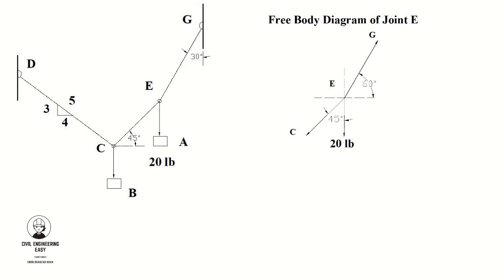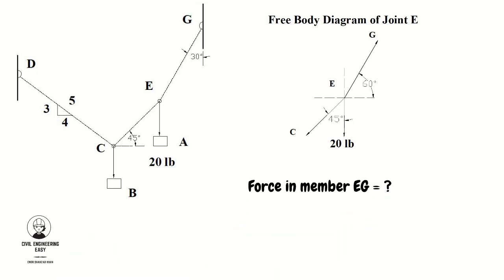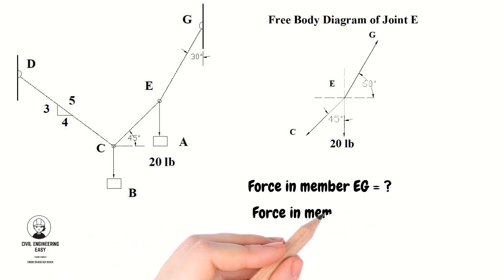Assume the force in chord EG as tension — that is, the arrow of the force is away from the joint. Also assume the force in chord EC as tension — that is, the arrow of the force is away from the joint. We now need to find out the force in member EG and the force in member EC using the equilibrium equations.